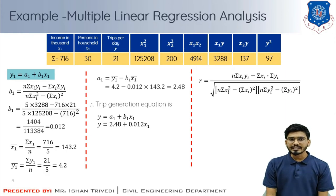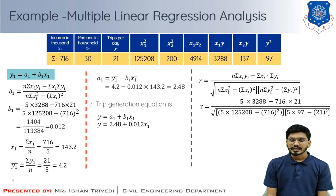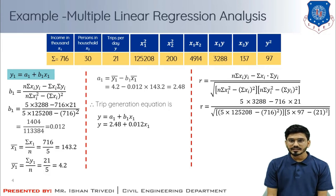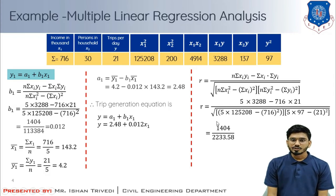Putting in the values — n=5, sigma(x1y)=3288, sigma(x1)=716, sigma(y)=21, sigma(x1 squared)=125208, and 716 squared — and simplifying, we get r = 0.628 for the first model.